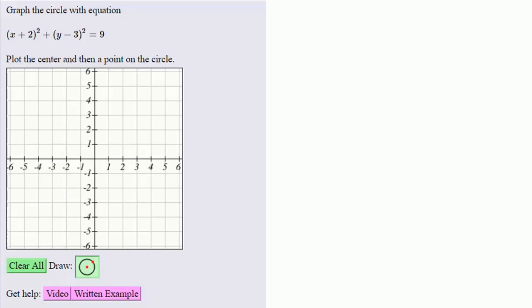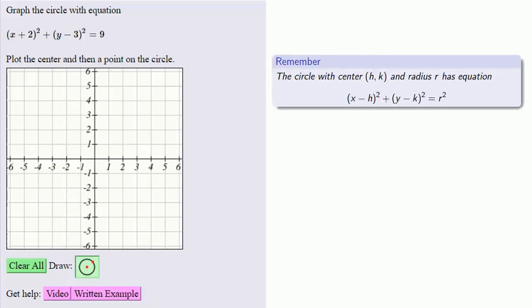So the first thing to remember is that the circle with center h, k, and radius r has the equation x minus h squared plus y minus k squared equals r squared.